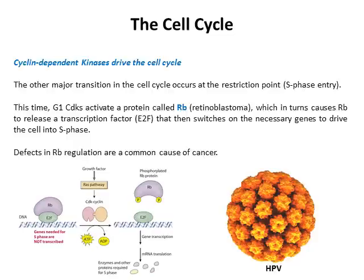Rb is a very important tumor suppressor protein. If you receive a strong enough signal from growth factors, signaling occurs within the cytoplasm that ultimately leads to activation of a cyclin-dependent kinase, which phosphorylates the Rb protein. In this instance, phosphorylation of Rb causes it to release E2F, and E2F can then go about turning on gene transcription for the range of genes needed for entry into S phase. If Rb is inactivated or mutated, you deregulate this process and allow cells to divide when they shouldn't — which is effectively cancer. Certain viruses known to cause cancer, such as HPV associated with cervical cancer, express proteins that specifically target and inactivate Rb to drive cells through the cell cycle.